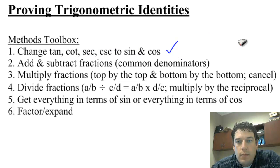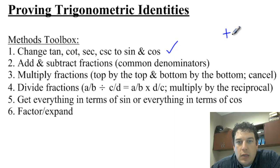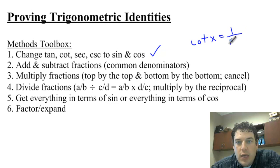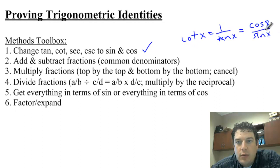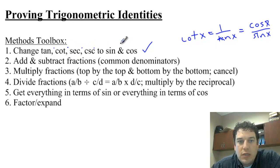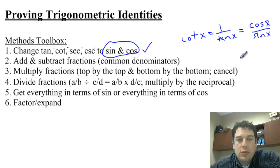One thing I've seen is that people who see cotangent of x write it as one over tangent of x. That's okay if there's a tangent or cotangent there, but typically we want to write cotangent as cosine of x over sine of x. So always change your tangents, cotangents, secants, and cosecants into sines and cosines, and then we can work with the Pythagorean identities.